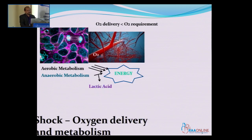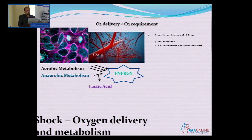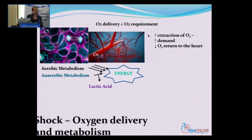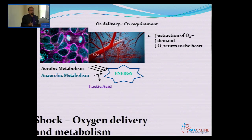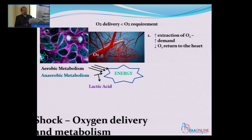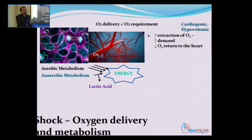When oxygen is being supplied by blood vessels to the tissues, and tissues are deprived of oxygen, there will be an increase in the demand for oxygen. Tissues will furiously extract all the oxygen being supplied through the blood vessels, so the blood returning back to the heart will have a lower oxygen content. This situation occurs in cardiogenic shock and hypovolemic shock.